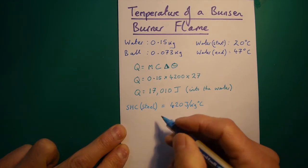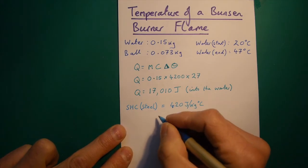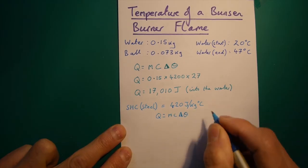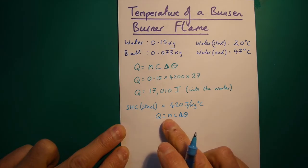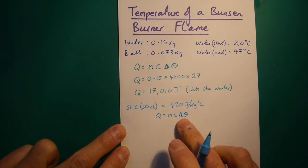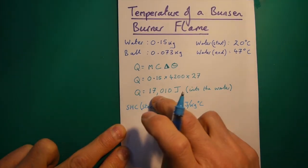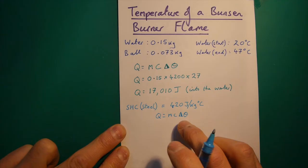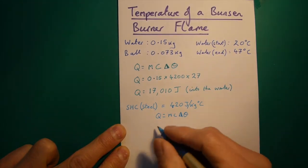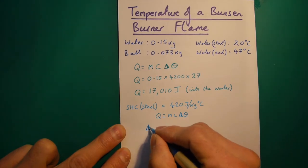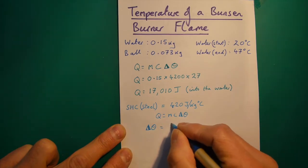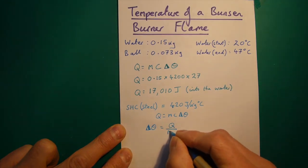So, we know that the formula for specific heat capacity is Q equals MC delta theta. OK, so the energy fed in is the mass of the steel times the specific heat capacity of the steel times by the temperature change. Well, we know the energy that we're going to feed back in mathematically. We know the mass of the ball. We know its specific heat capacity. So, how much would that rise the temperature by? So, we rearrange this. So, the change in temperature, it's important you remember that it's a change in temperature, is equal to Q divided by MC.